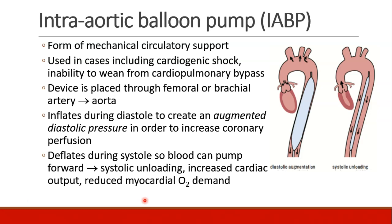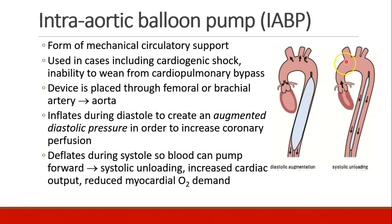The intra-aortic balloon pump is a form of mechanical circulatory support used in cardiogenic shock or for patients who can't wean from cardiopulmonary bypass. It is placed through the femoral or brachial artery and advanced on a catheter into the aorta. The large balloon inflates during diastole to create an augmented diastolic pressure, increasing coronary perfusion. It deflates during systole so blood can pump out the aorta — this is called systolic unloading — resulting in increased cardiac output and reduced myocardial oxygen demand.